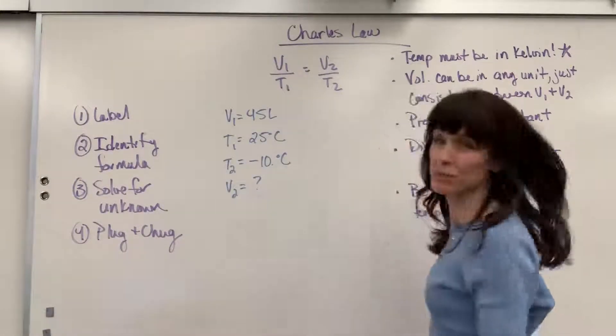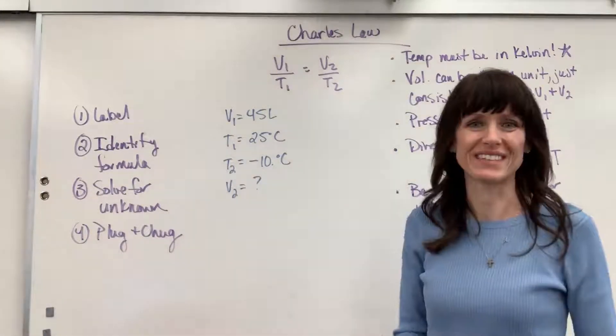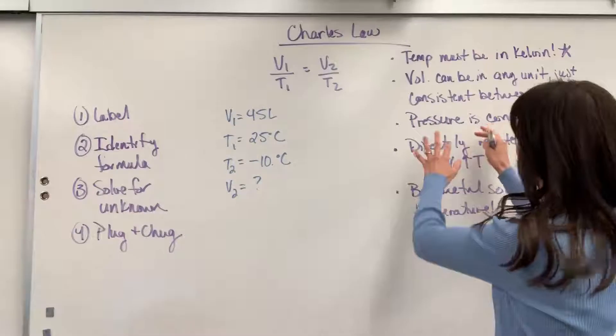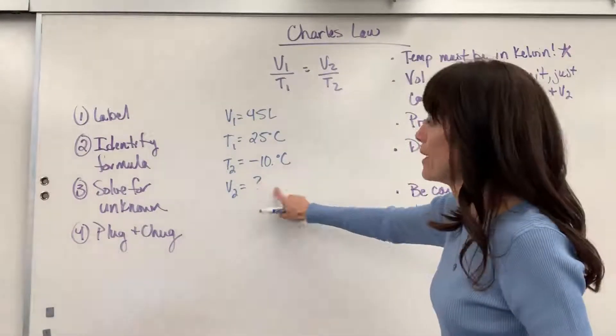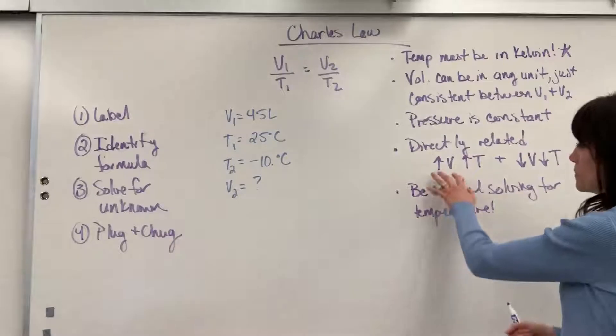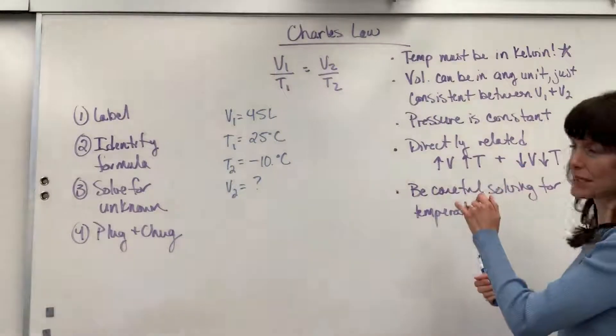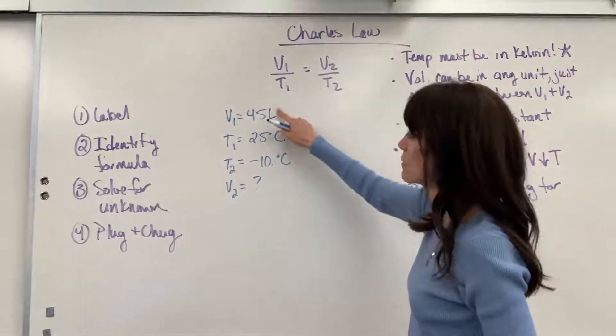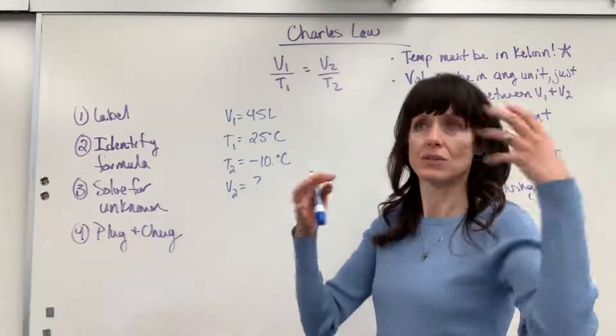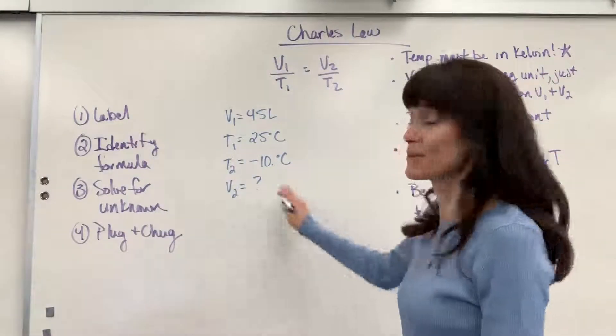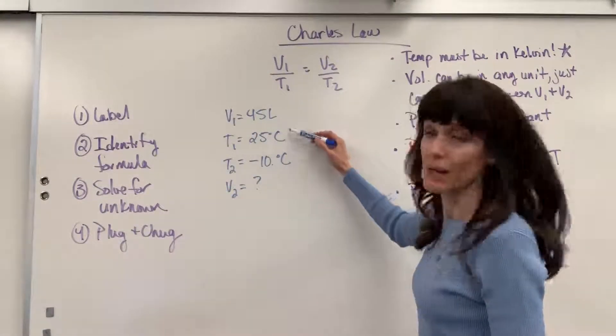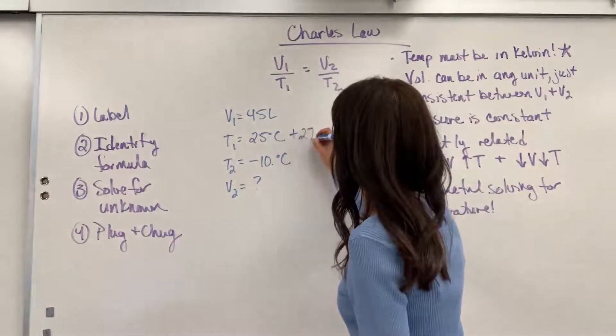So I've put up an example here. We have a balloon that's 45 liters and we're at 25 degrees C. The temperature is going to decrease to negative 10 degrees C. We want to know what's the final volume. Because this is a direct relationship, I want you to predict what's going to happen to that volume. The temperature is decreasing. As temperature changes, the volume changes the same way. If the temperature decreases, then we would predict the volume will also decrease. Notice I labeled everything. That's always where I begin. At this point, I've got to get my right units before I plug into the formula.